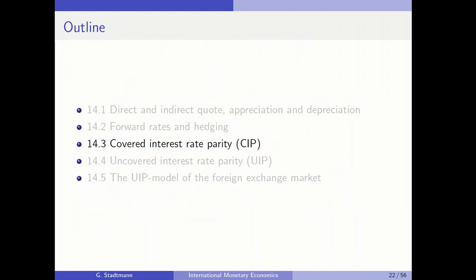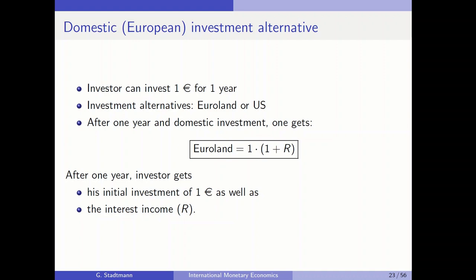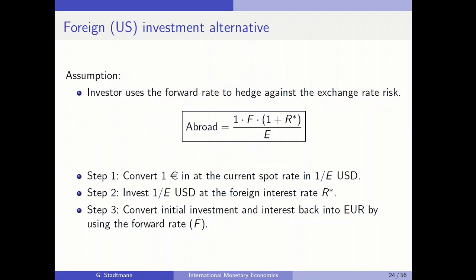Let's look at sub-chapter 14.3: the Covered Interest Rate Parity. We derive the relationship between the interest rate differential and the relative difference between the forward rate and the current spot rate. The setup: an investor can invest one euro for one year in two alternatives — domestically or in the US. Investing domestically yields 1 × (1 + r), where r is the domestic interest rate.